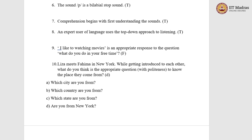The final question: Lisa meets Fahima in New York. While getting introduced to each other, what is the appropriate question with politeness to know the place they come from? Option A: which city are you from? Option B: which country are you from? Option C: which state are you from? Option D: are you from New York? The right answer is option D, 'are you from New York?' Not that the other options are wrong, but option D is the polite way of asking someone where they are from.